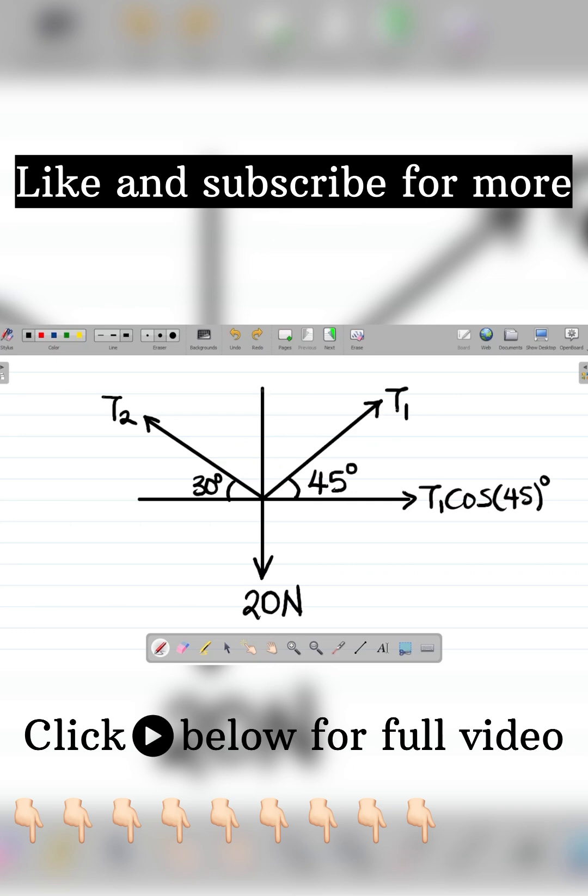The vertical component becomes sine of it, which is simply the vertical component here would simply be T1 sine of the angle there, which is 45 degrees. Alright, that's for T1.